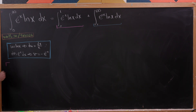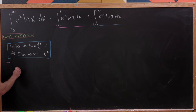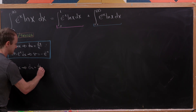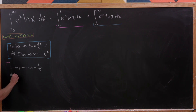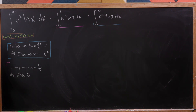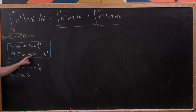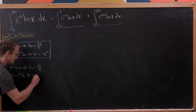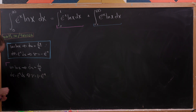Now for the magenta part, we have the same setup: u equals the natural log of x, making du equal to dx over x, and dv equal to e to the minus x dx. But here we'll use the fact that integration is only unique up to a constant. So instead of taking v to be minus e to the minus x, we take v to be 1 minus e to the minus x.